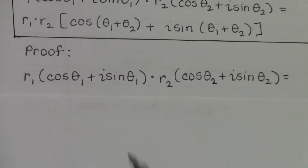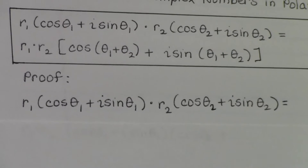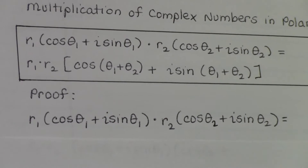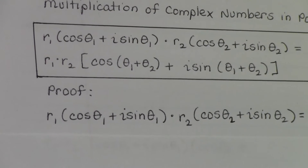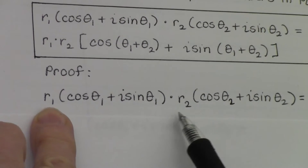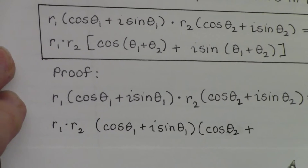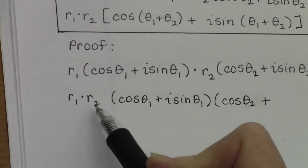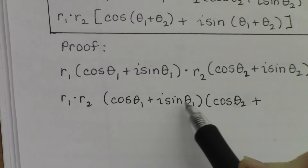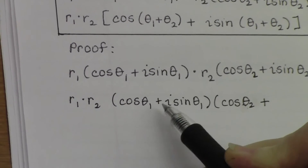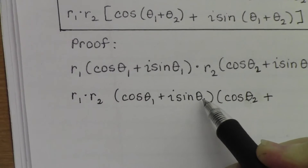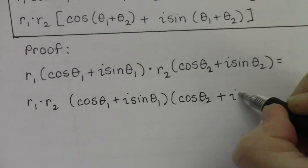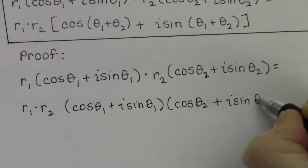The first thing is just rewriting the initial statement — I just rewrote the two complex numbers. Then I want to reorganize a little bit. I'm going to bring the r values to the front: r₁ times r₂ come to the front. And then I rewrite the part in parentheses as (cosine θ₁ + i sine θ₁) times (cosine θ₂ + i sine θ₂).